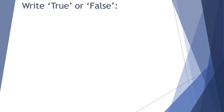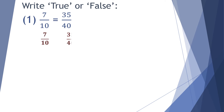Let us solve one more question — True or False. Question number 1: 7 upon 10 is equal to 35 upon 40. Let us compare 7 upon 10 and 35 upon 40 by the cross multiplication method.